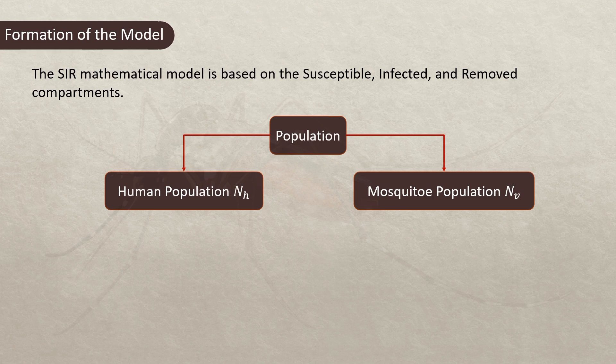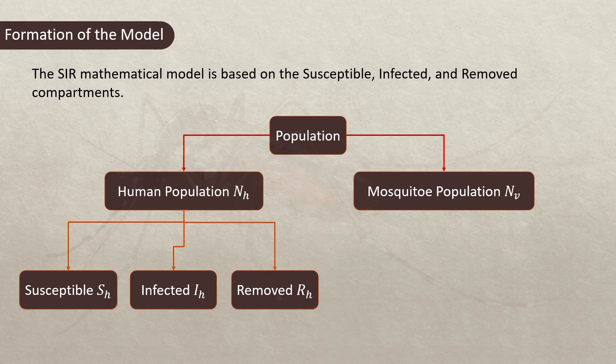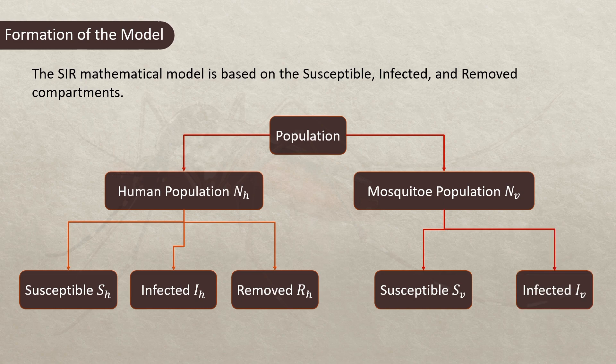The human population can be divided into three compartments: susceptible, infected, and removed or recovered. The vector population can be divided into two compartments: susceptible and infected. There will be no removed or recovered class for the vector population.